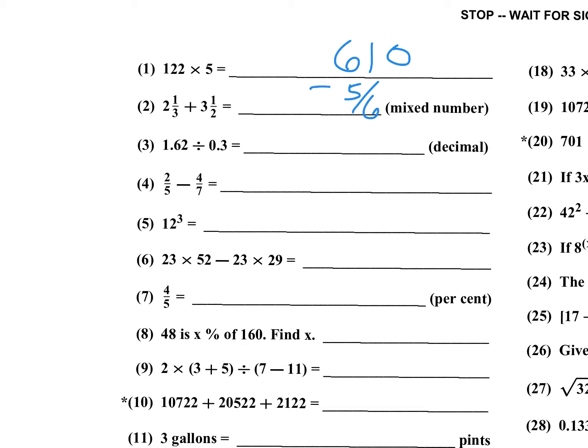Number 3: 162 divided by 3. Think of it as 16.2 divided by 3. 3 goes into 16 five times, subtract 15, you have 1, bring down 2 — 3 goes into 12 four times. So 16 divided by 3 is 5.4, and the answer is 54.